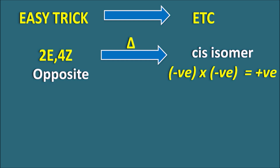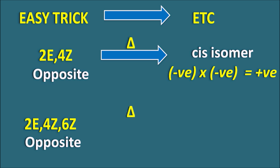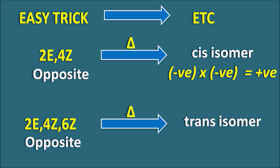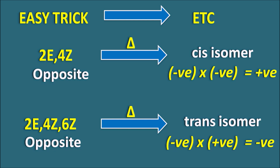Similarly, if it is not even but odd — for example 2E4Z6Z — there are 3 double bonds (odd). Looking at the terminal configurations, 2E and 6Z are opposite. With thermal energy: the odd number replaces even, so odd is positive (not negative). Negative (odd) times negative (opposite configuration) gives positive... wait — odd is taken as positive, so positive times negative gives negative, meaning the trans isomer is produced. In this way: if even is replaced with odd, the configuration is reversed. If thermal is replaced by photo, the configuration is reversed. If the reactant has similar (same) configuration instead of opposite, the configuration is also reversed. Any single change in condition gives the opposite configuration.